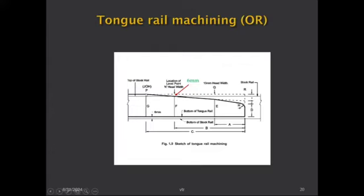With one wheel on the stock rail and the other on the tongue rail, which is 6mm higher, there is always a design twist. At loop line speeds this is less critical, but on the main line at 100–120 km/h, this 6mm level difference causes jolting and vibration. This is one of the lacunas of the overriding switch.